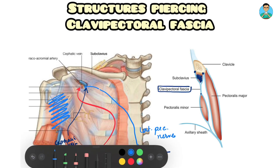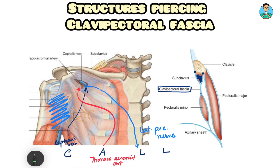And the final L stands for lymphatics. So the mnemonic is C-A-L-L: C for cephalic vein, A for thoracoacromion artery, the first L stands for lateral pectoral nerve, and the second L stands for lymphatics.